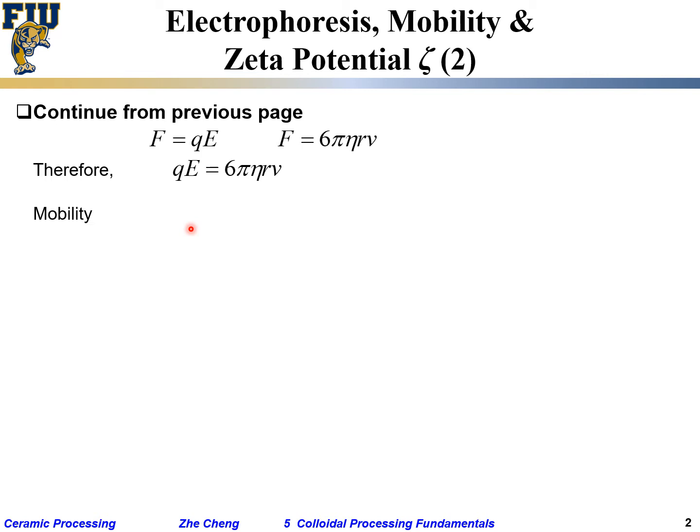If we define mobility u, mobility is velocity divided by your driving electric field - potential energy over distance. This is v over E. Rearranging this as 6π eta r in the denominator with q gives us mobility, which means under a certain electrical field, how fast you can go. Charge, viscosity, and radius can all be measured.